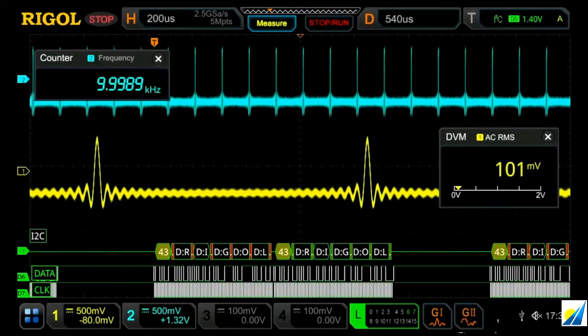Currently, we have all six instruments that are built into the 7000 series listed. We've got our counter, our waveform generator active on both analog channels, our digital voltmeter, our logic analyzer, and then finally our protocol analyzer.